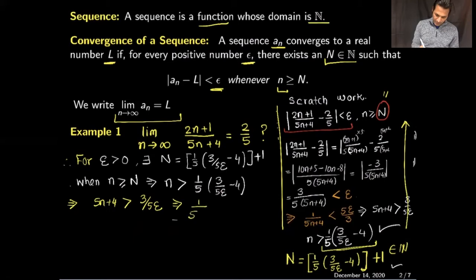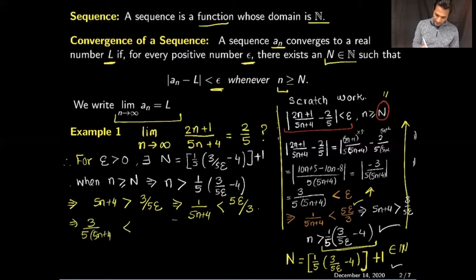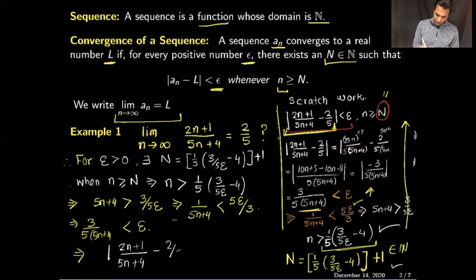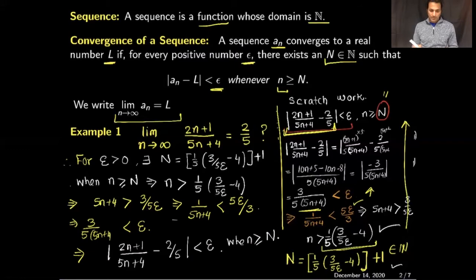This implies 1/(5n+4) < 5ε/3, and going back this gives 3/(5(5n+4)) < ε. But this is exactly equal to |(2n+1)/(5n+4) − 2/5| < ε, whenever n ≥ N. This proves the limit of the sequence is 2/5.